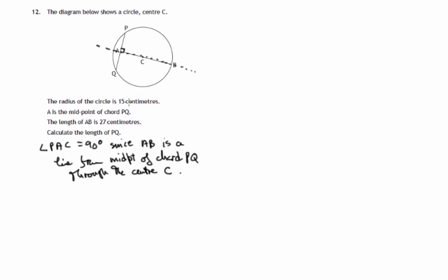Now we have various lengths given. From C to B must be 15, that's a radius. Also from P to C must be 15.